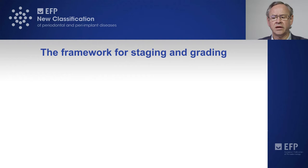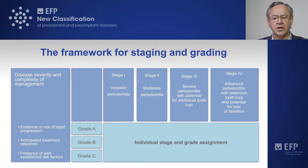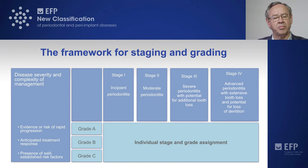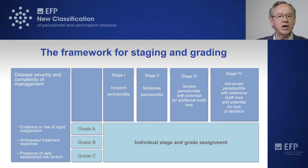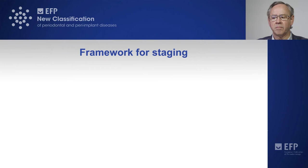In this slide we have not only the framework for staging but also the framework for grading. We grade the patient according to the risk of progression. We may have direct evidence of progression measured by clinical attachment loss or bone loss, or we may evaluate the presence of specific risk factors that have a proven direct relationship with progression of periodontitis, such as heavy smoking and uncontrolled diabetes.